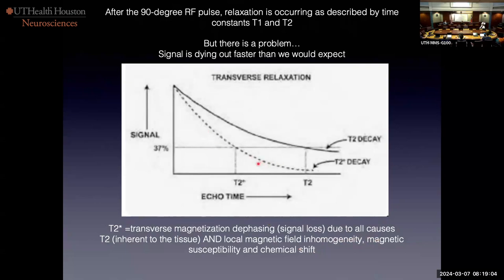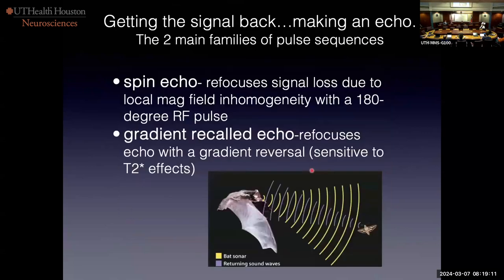It would be nice if there was some way to get rid of this inhomogeneity to see the true T2 of a tissue — and there is a way. This gets to the two main families of pulse sequences: GREs and spin echoes. For spin echo, there's a 90-degree pulse and then another RF pulse that gets rid of all local magnetic field inhomogeneity. The other type, GRE, uses a gradient reversal and will be very sensitive to T2 star effects — local magnetic field inhomogeneity — and signal will not be recovered.